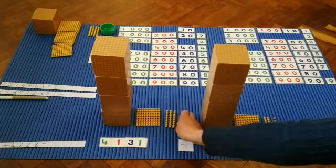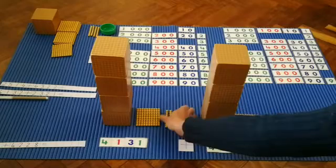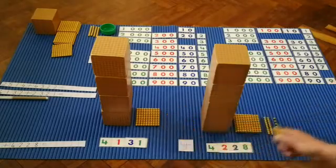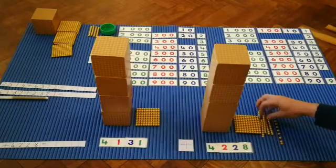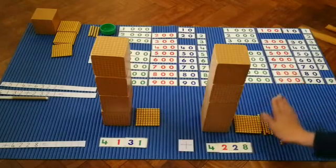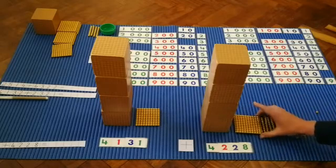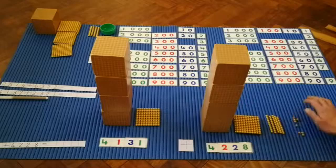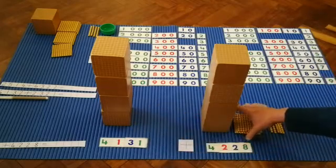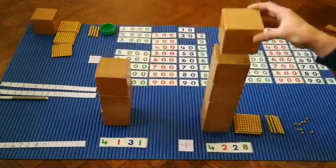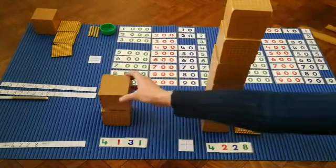Now let's remember this sign means we add them all together. So let's add all our units. Let's add all our tens together. Let's add all our hundreds together. And let's add all our thousands together. Look at this very big number we have made.